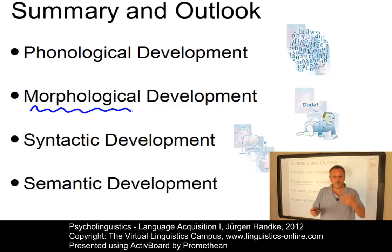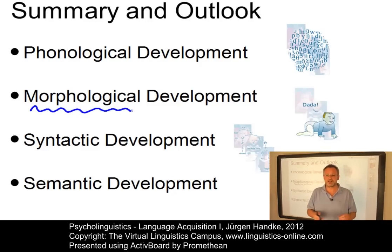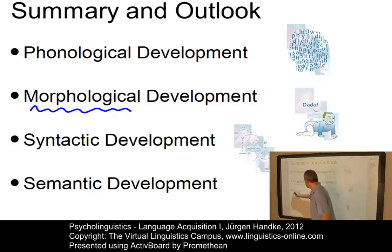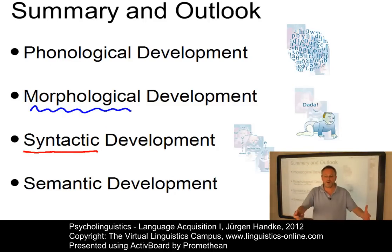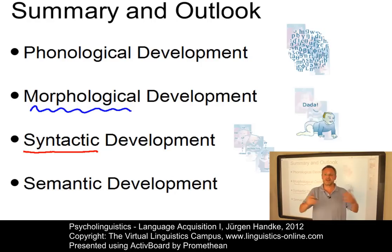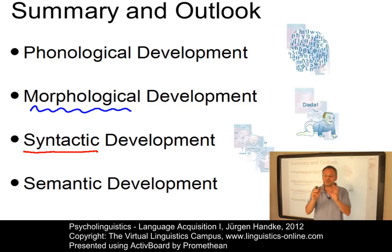That children possess morphological rules at a relatively early age has been shown in several classic studies, which we will also discuss. Then there is the big area of syntactic development — the development of sentences starting with one-word utterances that do not show any structural properties and are used to name objects in the environment. Later, at the one-word stage, children also use single words to articulate complex thoughts involving those objects, and then produce more and more complex utterances.